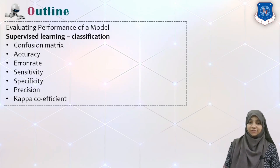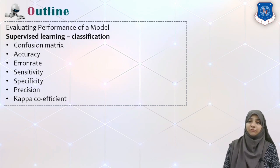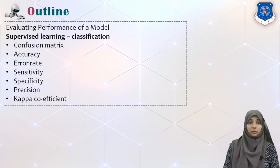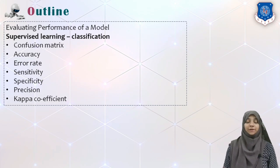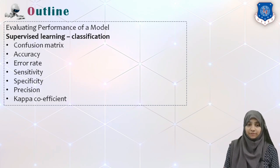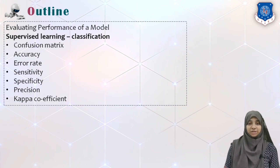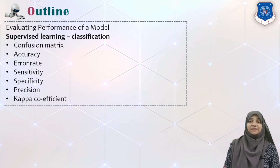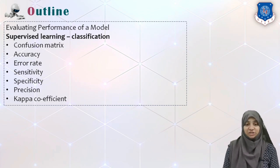Hi, in today's video we will see different parameters for evaluating the performance of a classification model in supervised learning. First, we will see how to create a confusion matrix for a given classification problem. Then we will see different measures of classification such as accuracy, error rate, sensitivity, specificity, precision, and kappa coefficient.